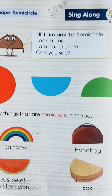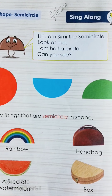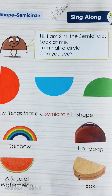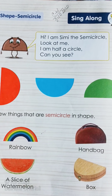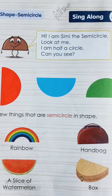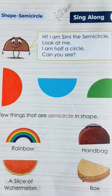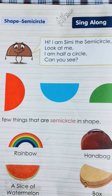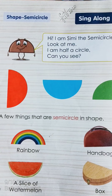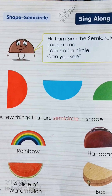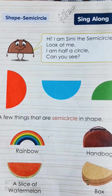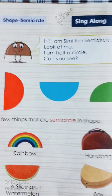A semi-circle is the half circle. A semi-circle has two corners and two sides. One of these sides is curved and one is very straight.